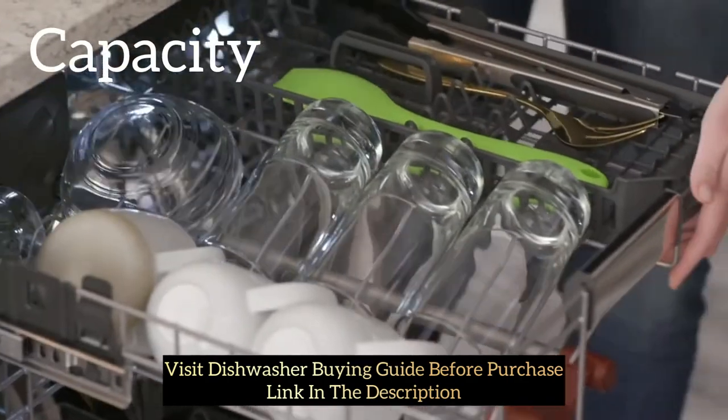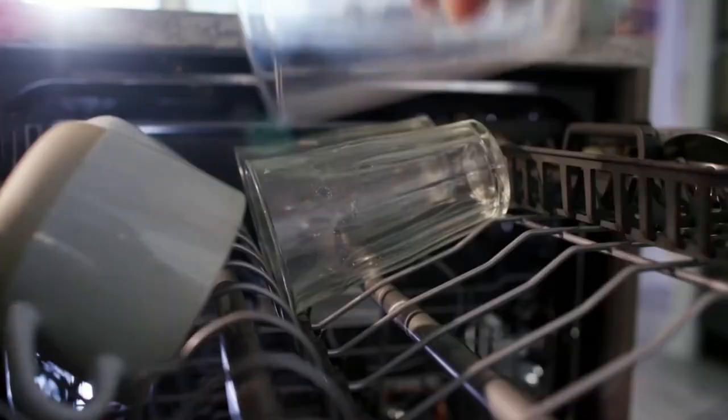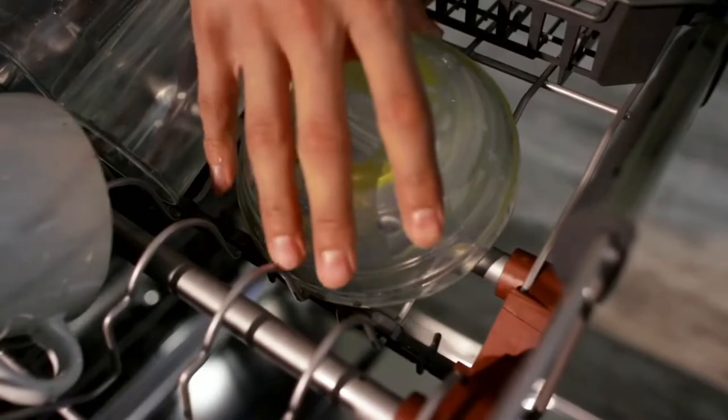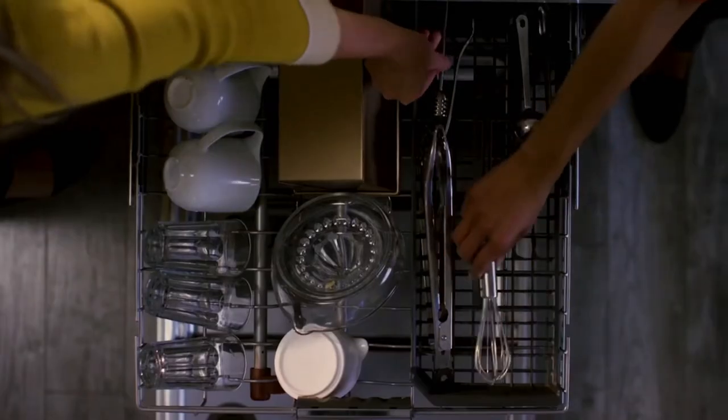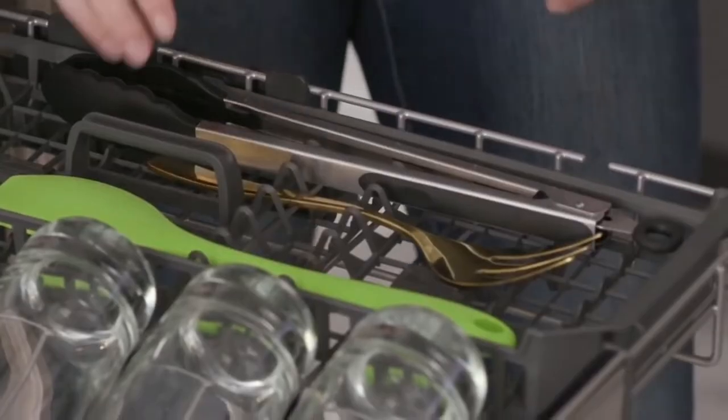Capacity: The KitchenAid dishwasher comes with a sustainable load capacity that enables you to wash as many as 16 place settings in a single load. This dishwasher has three racks. The adjustable middle rack offers loading flexibility to fit tall items.